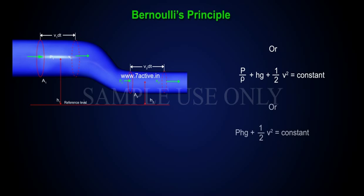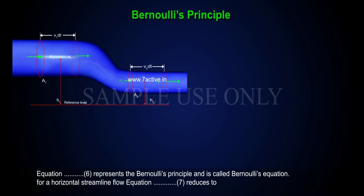Or, P plus rho HG plus 1 by 2V square is equal to constant. Equation 6 represents the Bernoulli's principle and is called Bernoulli's equation.